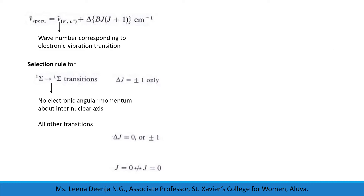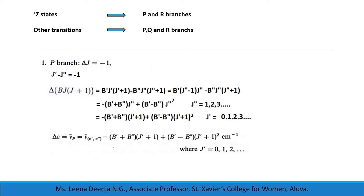Next we consider the selection rules. There are two different selection rules. First, we consider ¹Σ to ¹Σ transitions. ¹Σ is a state with no electronic angular momentum about the internuclear axis. For these transitions, ΔJ = ±1 only. For other transitions, ΔJ can take 0 or ±1. There is one restriction: J=0 cannot undergo a transition to upper J=0. But J=1 to upper J=1, J=2 to upper J=2, J=3 to upper J=3, etc. are possible. For ¹Σ states, only P and R branches will occur, and for other transitions, the Q branch will also occur.